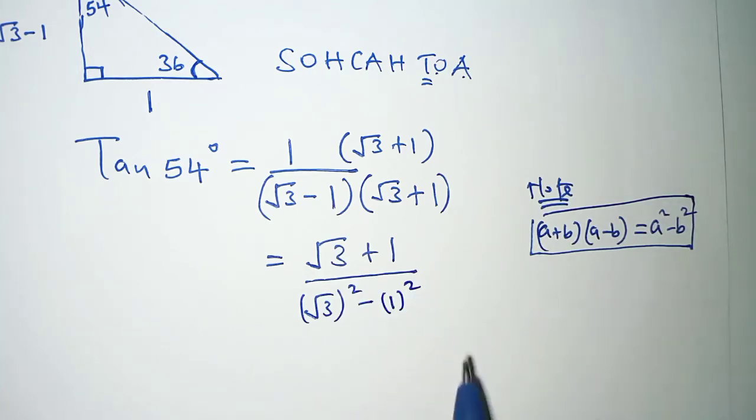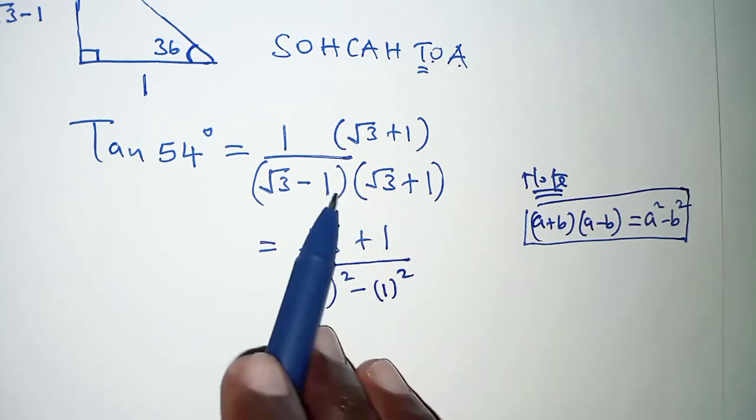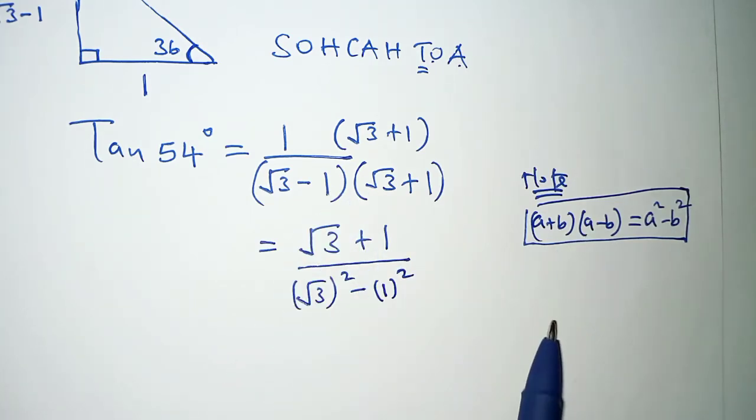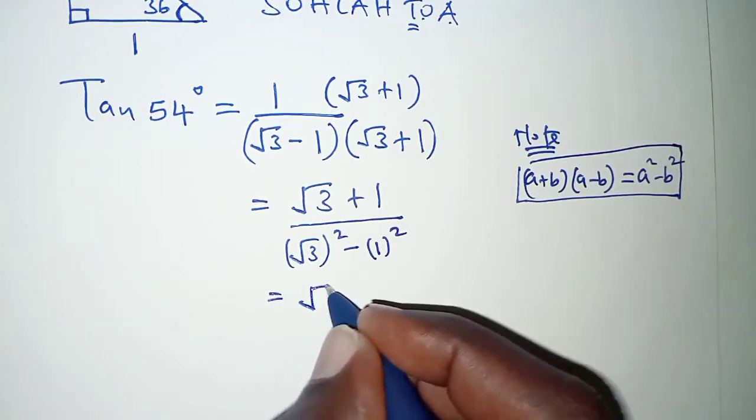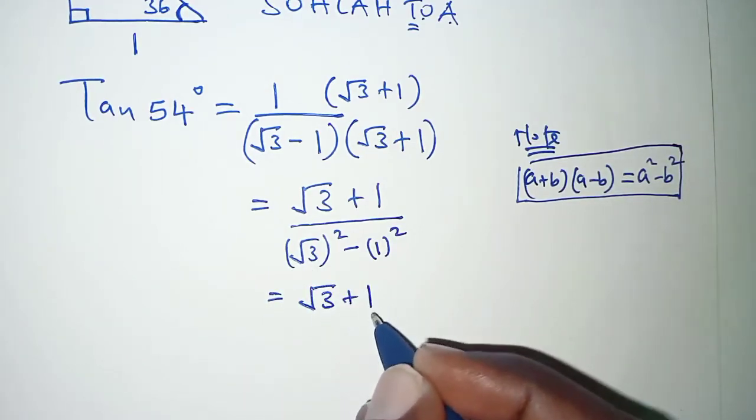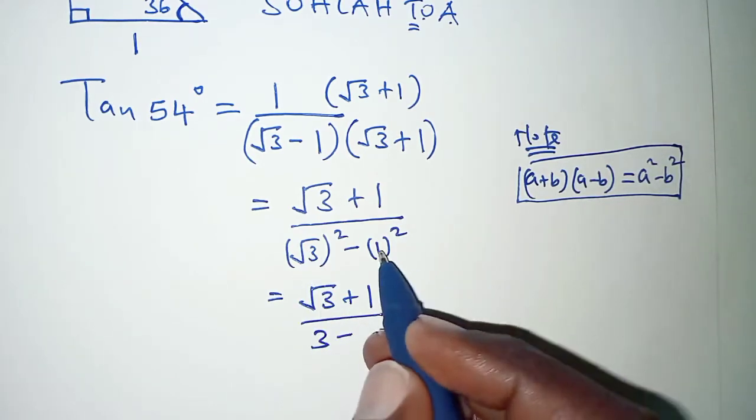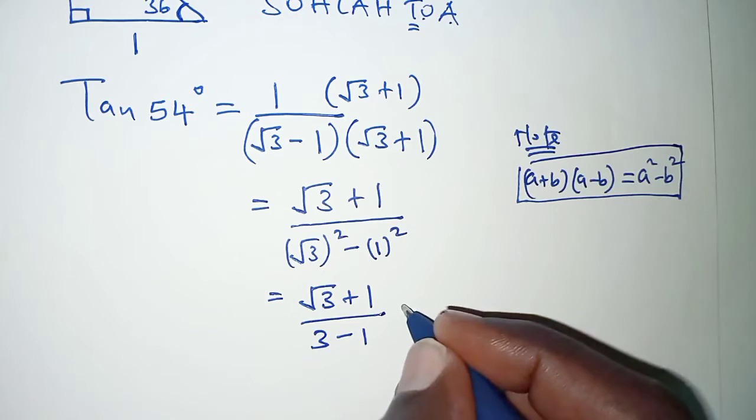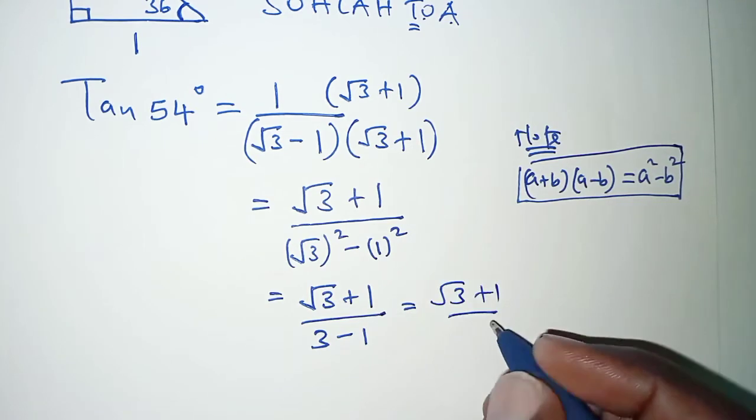So this simplifies further to root 3 plus 1 over root 3 squared is 3 minus 1 squared is 1. So we have root 3 plus 1 over 2.